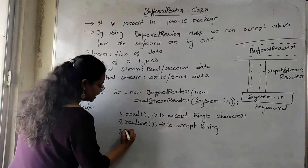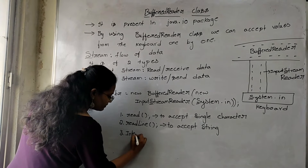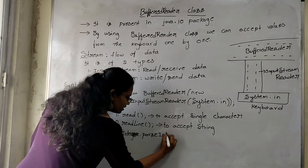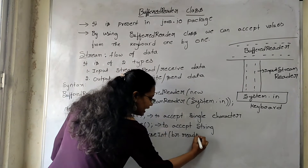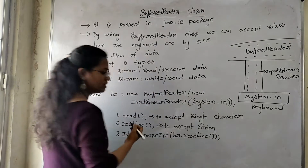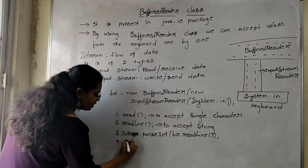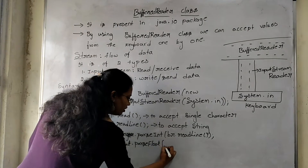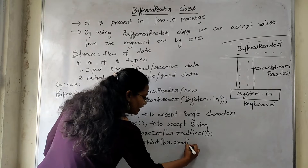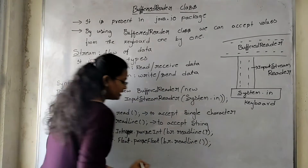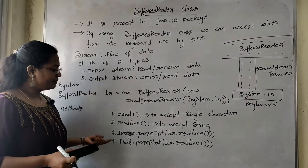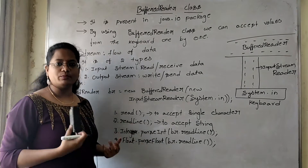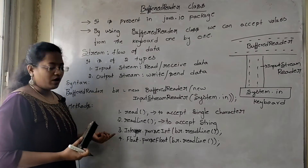If you want to take any Integer value from the Keyboard, then we have to use the method Integer.parseInt(br.readLine()). This is the method to accept an Integer value from the Keyboard. If you want to accept any Float value, use Float.parseFloat(br.readLine()). You can use Integer for things like Student ID or Employee ID. When you want to take Salary or Price, then we are going to use the Float method.